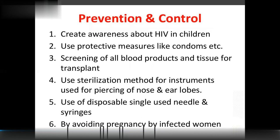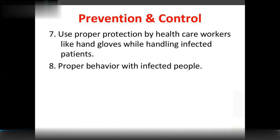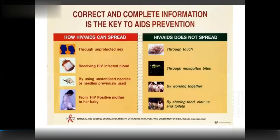Prevention and control: create awareness about HIV, use protective measures like condoms, screening of all blood products and tissues for transplantation, use sterilization methods for instruments used in piercing of nose and ear lobes, use single-use disposable needles and syringes, avoiding pregnancy by infected mothers, and healthcare workers should use hand gloves while handling infected patients. Proper behavior with infected people is essential. Correct and complete information is key to AIDS prevention.